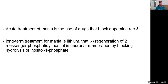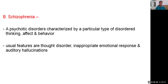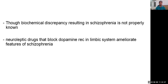Acute treatment of mania uses drugs that block the dopamine receptor. Long-term treatment uses lithium, which inhibits the regeneration of second messengers like phosphatidylinositol in the neuronal membrane by blocking the hydrolysis of inositol. The psychotic disorder schizophrenia is characterized by disorders of thinking, affect, and behavior. Key features are thought disorder, inappropriate emotional responses, and auditory hallucinations. Though the exact biochemical basis of schizophrenia is not fully known, neuroleptic drugs that block dopamine receptors in the limbic system ameliorate its features.